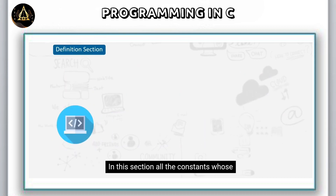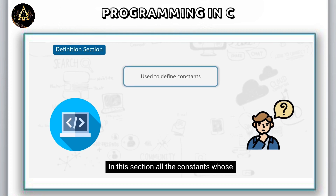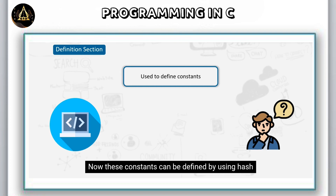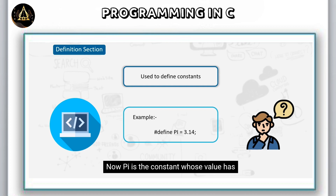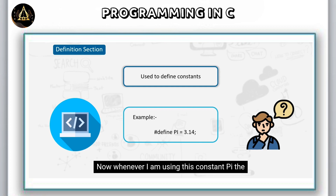In the definition section, all the constants whose value does not change throughout the program can be defined. These constants can be defined using #define. For example, pi is a constant whose value has been assigned as 3.14. Whenever this constant pi is used, the value will be replaced by 3.14.